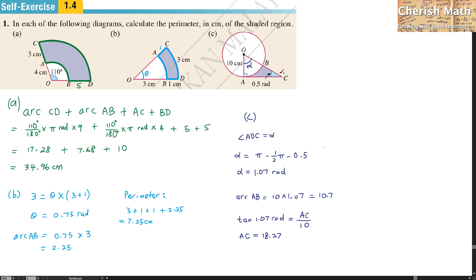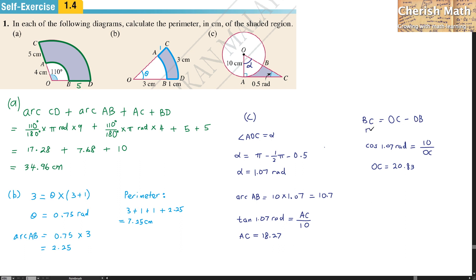To find BC, I use the full length OC minus the radius OB. Using cos(1.07) equals 10 divided by OC in triangle OAC, OC equals 20.83. So BC equals 20.83 minus 10, giving 10.83.